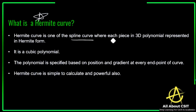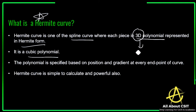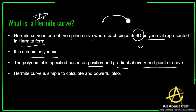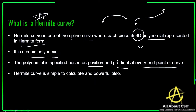A Hermite curve is a spline curve where each piece is a 3D polynomial represented in Hermite form — it is a cubic polynomial. A polynomial is specified based on a position and the gradient at every end point of the curve. So if you take any curve, there is a starting point and an end point. The Hermite curve is simple to calculate and it is powerful also.